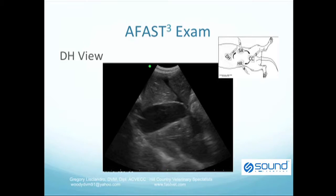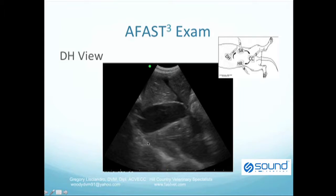On the DH view, what is classically obtained is the gallbladder kissing the diaphragm. You can see here as I draw the cursor around the gallbladder that it is kissing this other bright hyperechoic line, which is the diaphragm. We can also look into the pleural space with this type of depth.